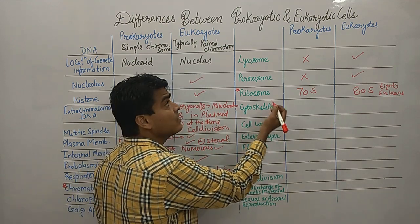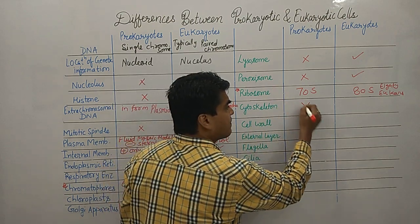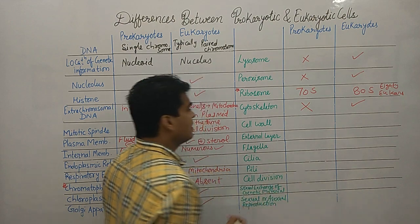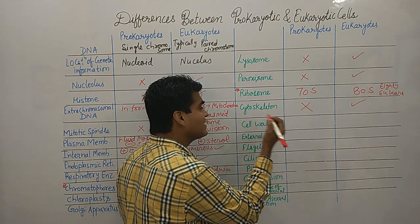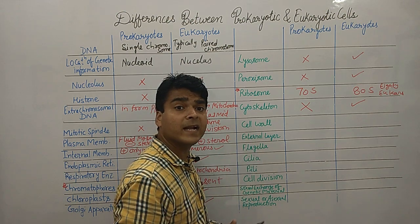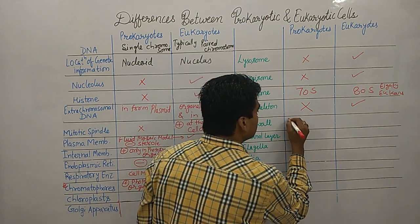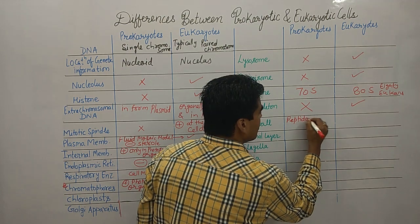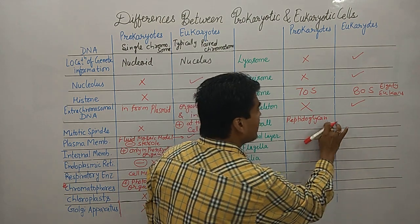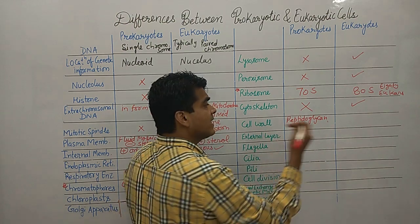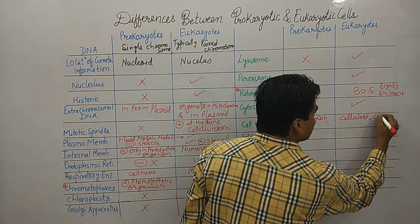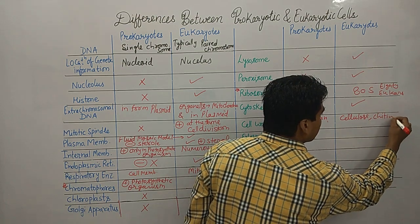Cytoskeleton is absent in prokaryotes and present in eukaryotes. The cell wall of prokaryotes is generally made up of peptidoglycan, whereas in eukaryotes the cell wall is made of cellulose, chitin, or other materials.